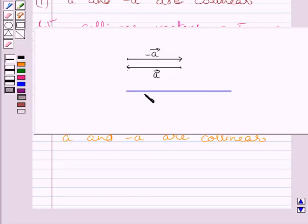Now, let us consider this figure. In this figure, this vector represents vector A and this vector represents negative of vector A. Clearly, we can see both these vectors are parallel to this line.